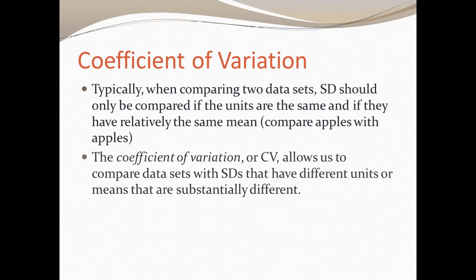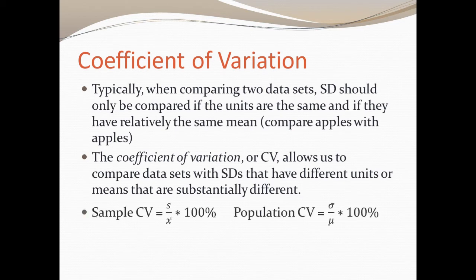However, if we're in a situation where we have apples to oranges, the coefficient of variation, or CV, allows us to compare data sets that have different units or means that are substantially different. The two formulas for coefficient of variation, one for sample and one for population, are below. Keep in mind that lowercase s is standard deviation, x bar is the mean of the sample. On the other side we have lowercase sigma, which is the population standard deviation, and mu, which is the mean of a population.